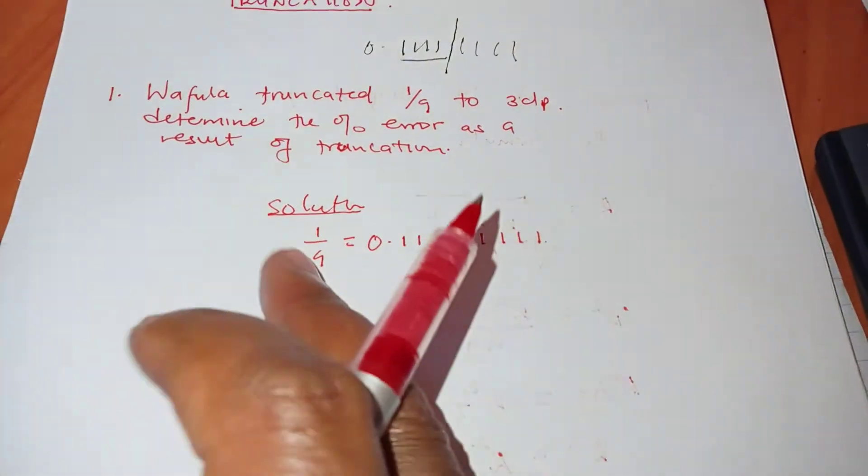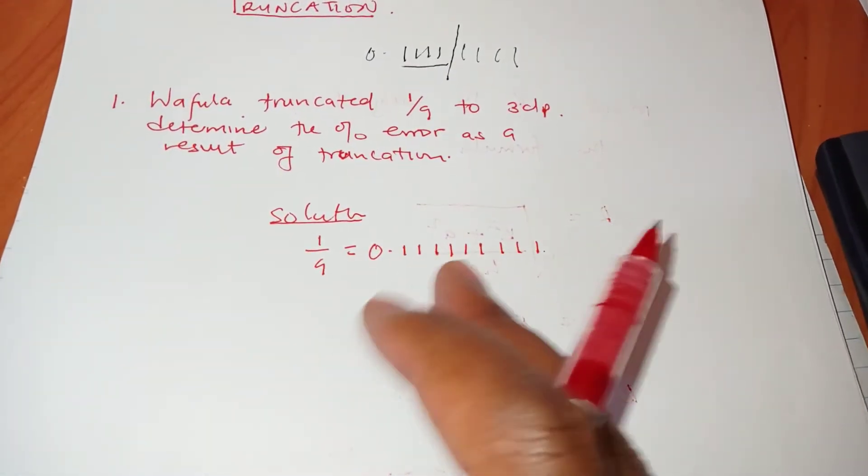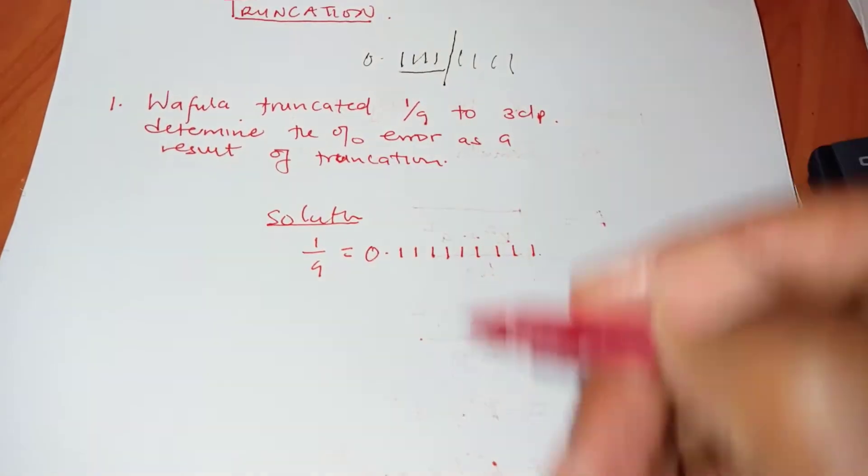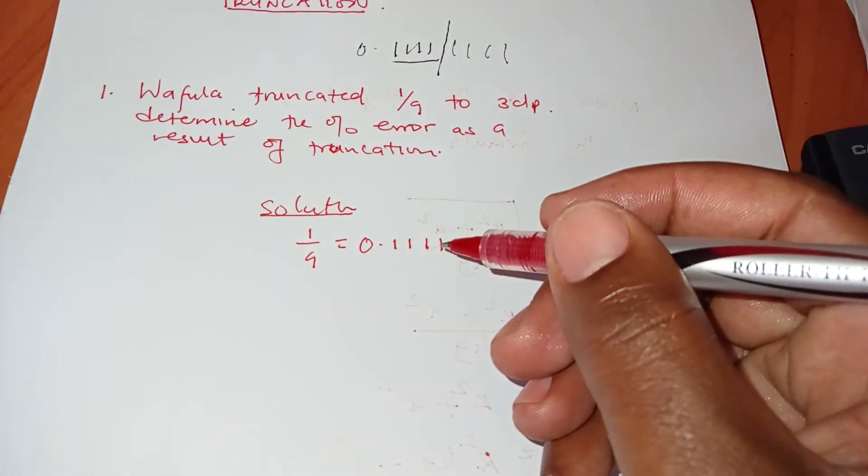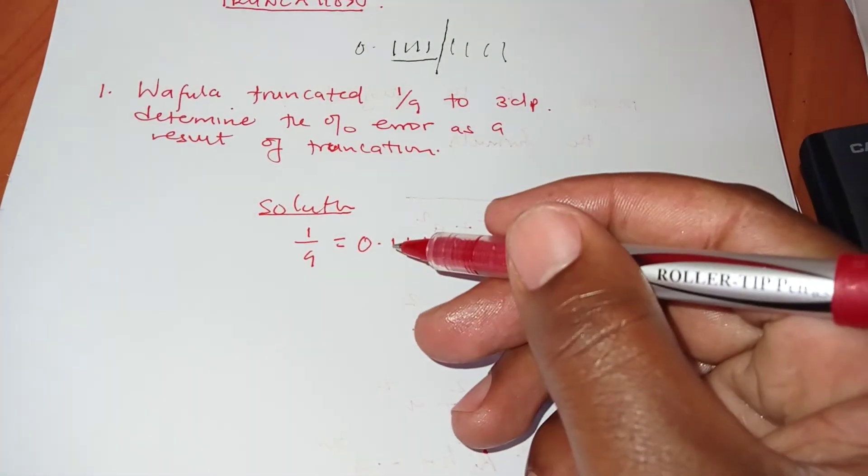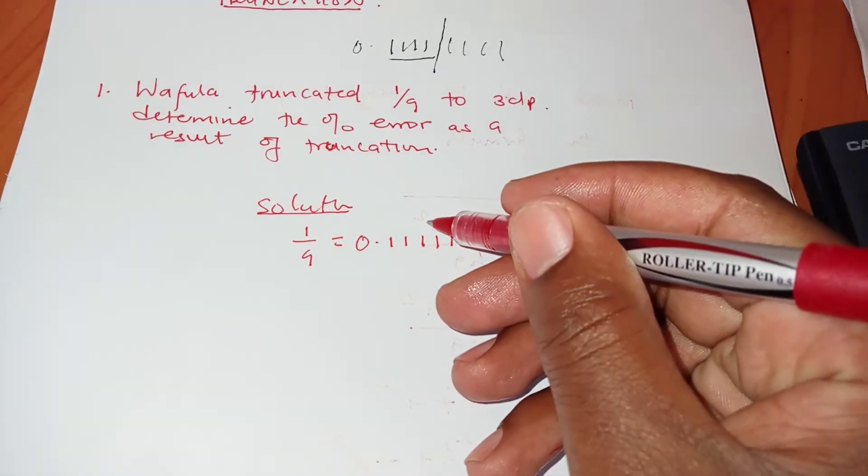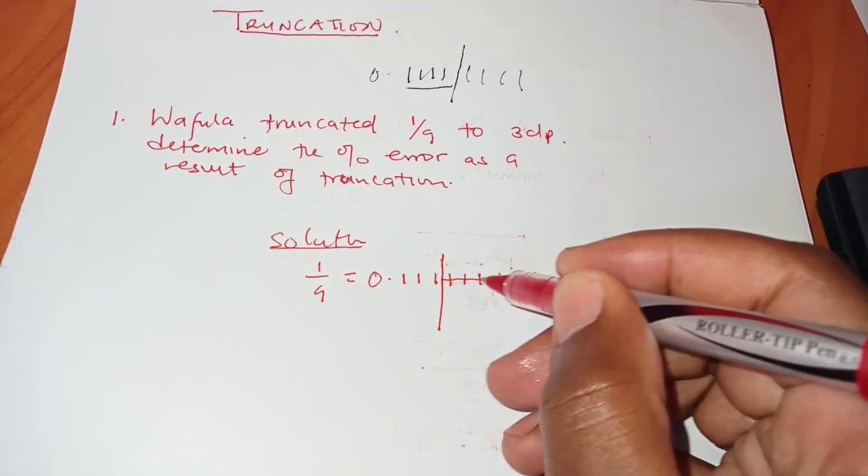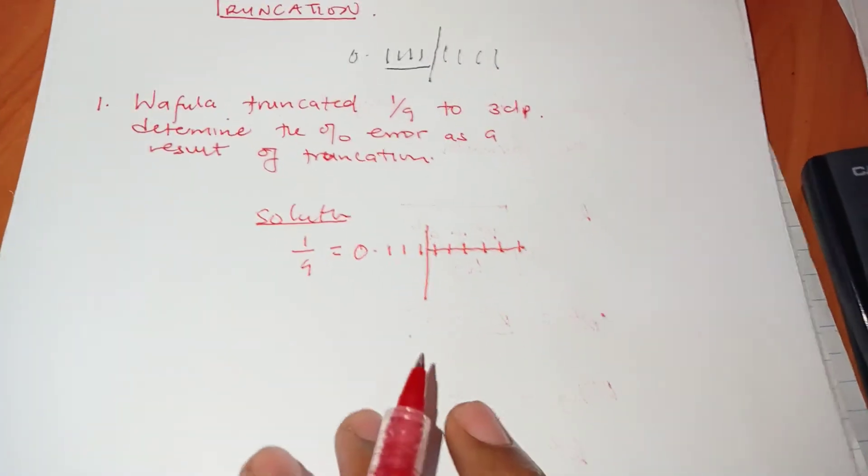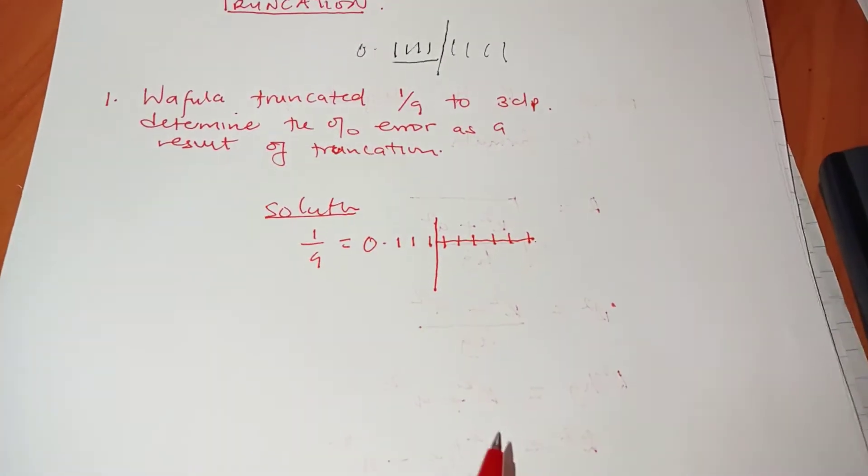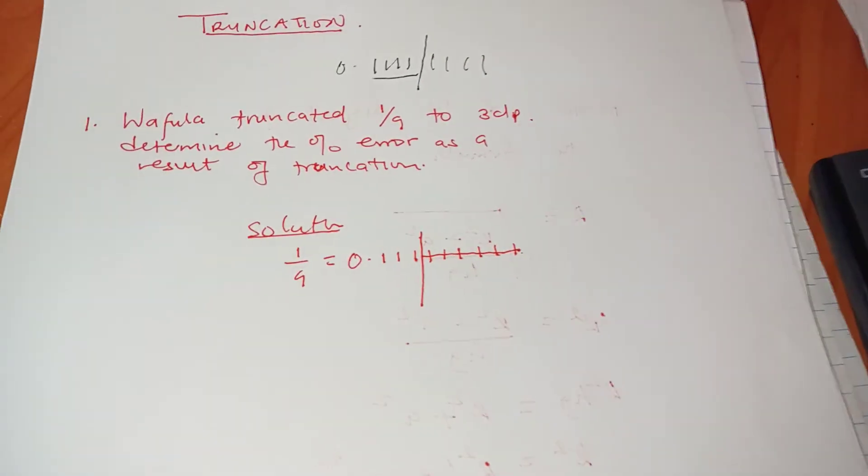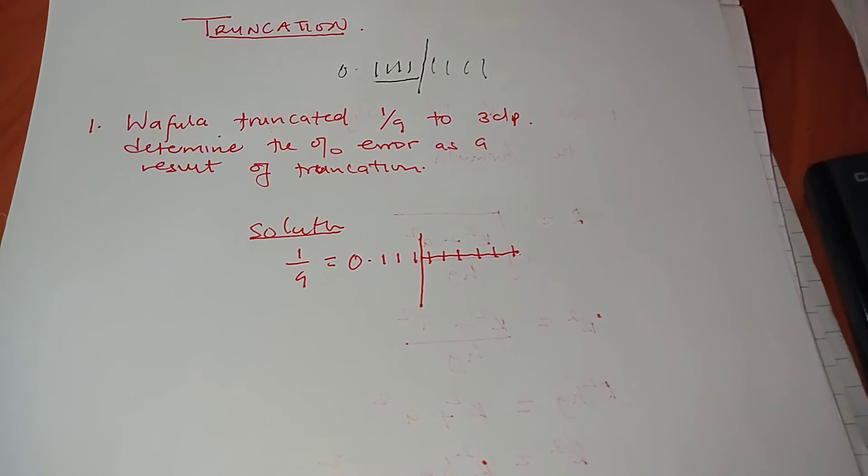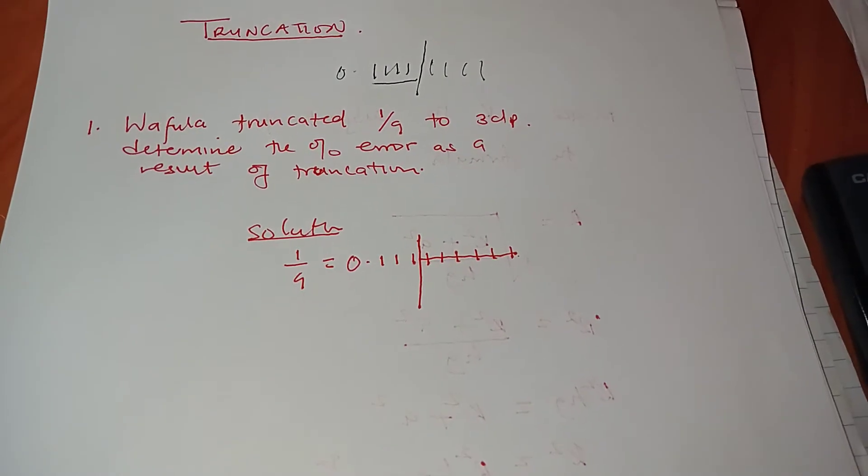All right, that fraction can be written in decimal form this way but this guy decided to chop off some digits. So chopped off correct to three decimal places - one two three up to that point. This guy chopped off, kind of ignored the rest. So what was the error arising from this truncation?